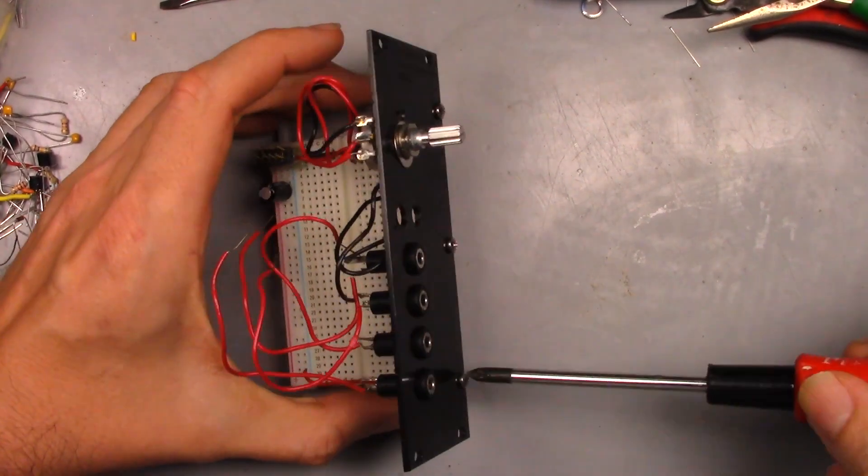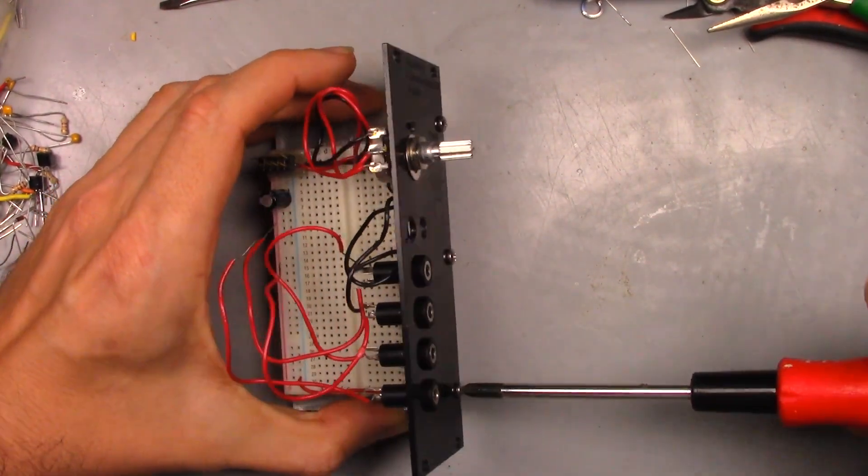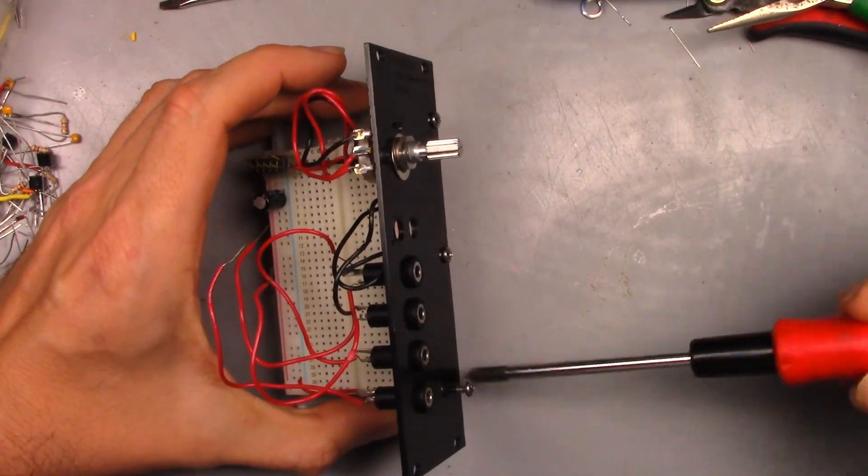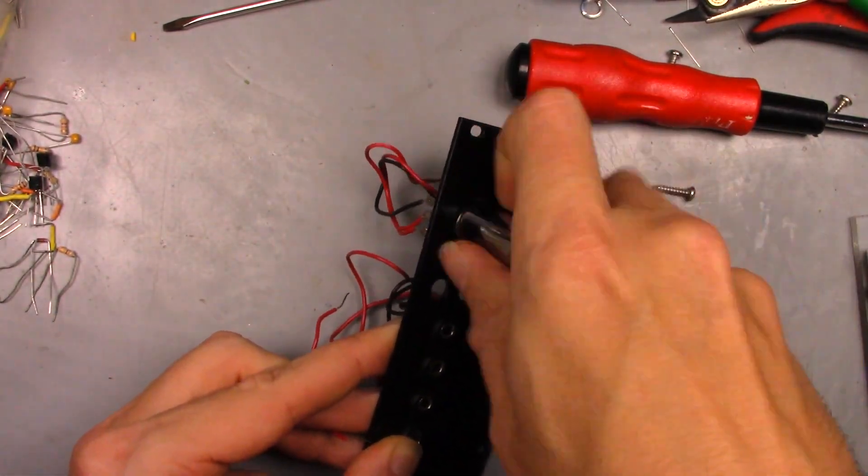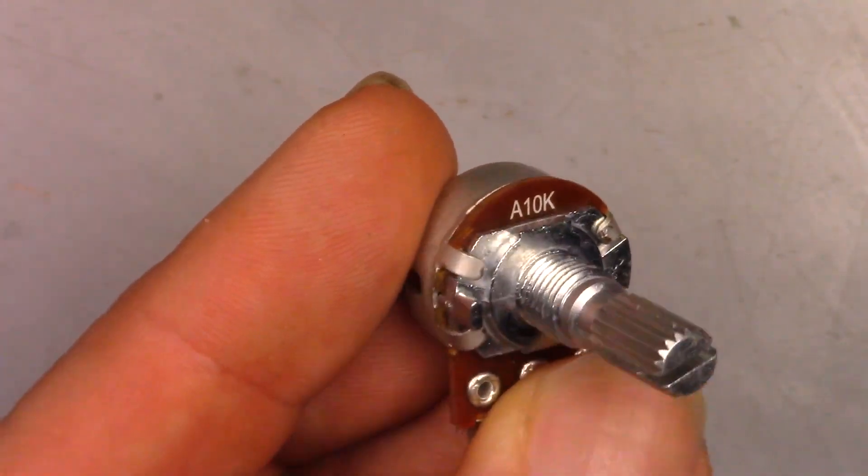Now to breadboard it. First step is removing the faceplate from the breadboard module, as there needs to be some modifications done. First is to remove the 100k linear potentiometer, and replace it with a 10k audio taper potentiometer.